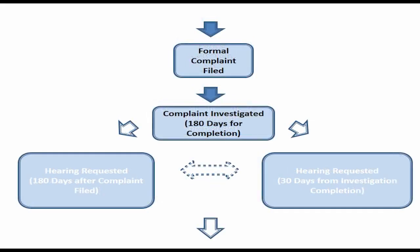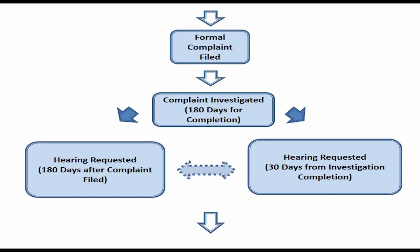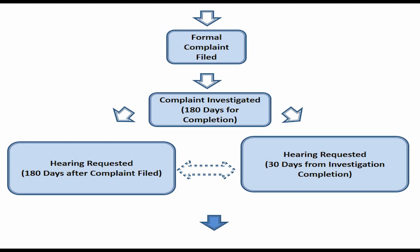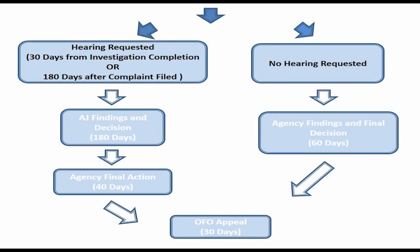If your complaint is accepted for investigation, the agency normally has 180 days to complete the investigation from the date of the filing of the formal complaint. At the end of the investigation, you will be sent the Report of Investigation and given 30 days to choose whether you want a hearing with an EEOC Administrative Judge or a final agency decision. You may also choose a hearing after 180 days, even if the investigation is not complete.